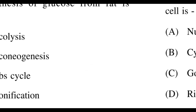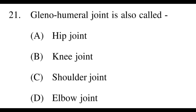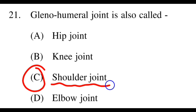Next question: The glenohumeral joint is also called? Options: A: hip joint, B: knee joint, C: shoulder joint, D: elbow joint. The right answer is C, shoulder joint. Because it is formed by the combination of the glenoid and humerus, its other name is the shoulder joint.